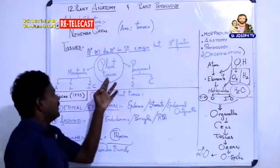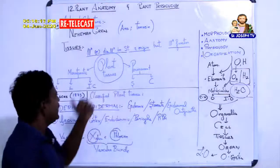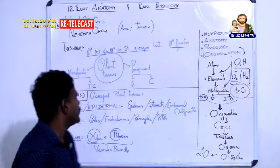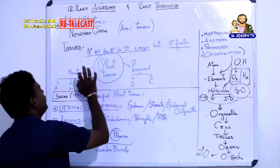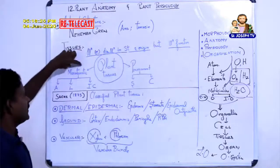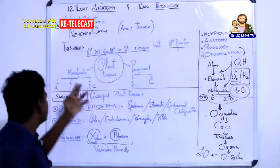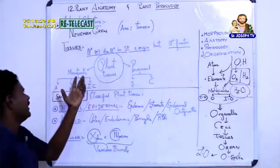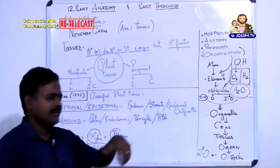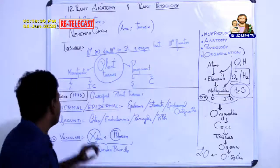What you have learned in 9th standard about plant tissues: plant tissues can be divided into two types — meristematic tissues and permanent tissues. Meristematic tissues can also be called temporary tissues, while permanent tissues remain as they are.